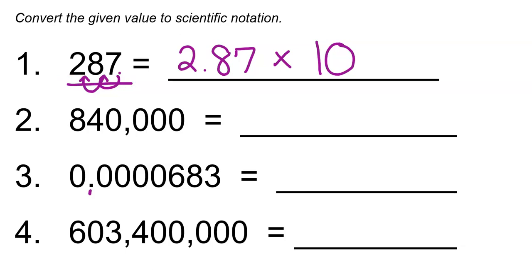The exponent or power that we put on our 10 is equivalent to the number of times we moved our decimal point. Looking back, we moved our decimal point 1 time, 2 times, so our power is going to match that value of 2.